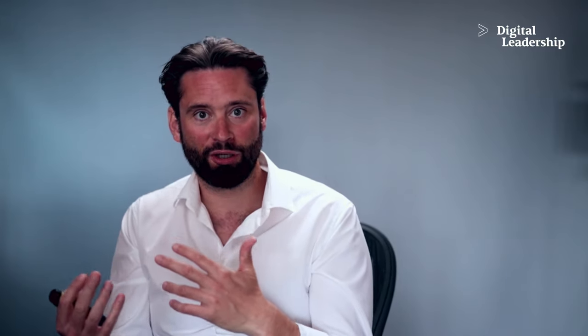The supporting processes depicted at the top of the canvas cover firm infrastructure, organization, partners, and locations, while the supporting areas at the bottom cover HR, management systems, finance, legal, as well as information.